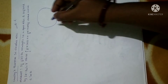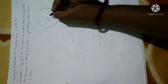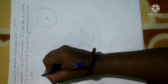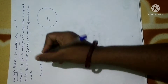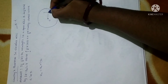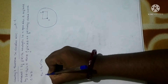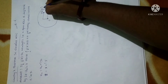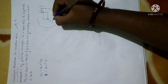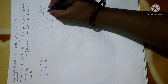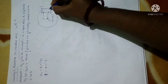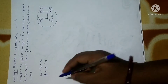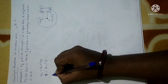Let C be a closed curve in D. Let O be the center of the circle, with z₀ = x₀ + iy₀, and let P be any point with coordinates z = x + iy. So the coordinates of O are (x₀, y₀), the coordinates of P are (x, y), and z₀ is of the form x₀ + iy₀ while z is of the form x + iy.